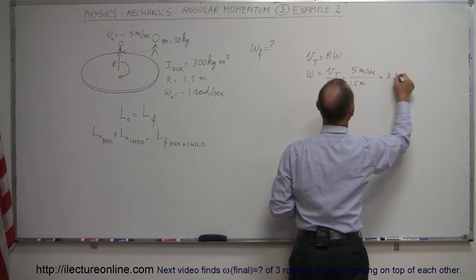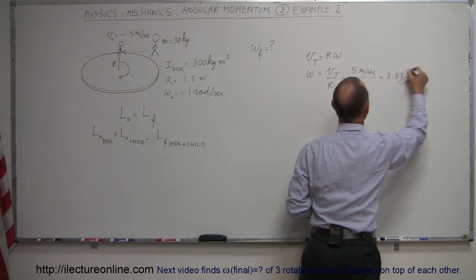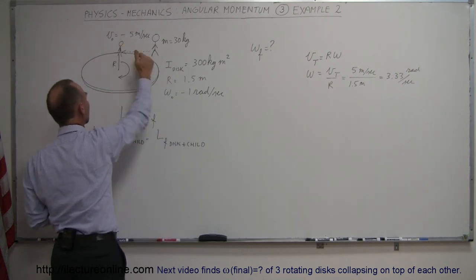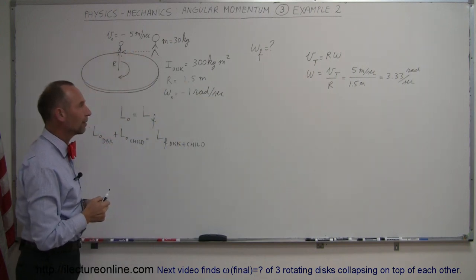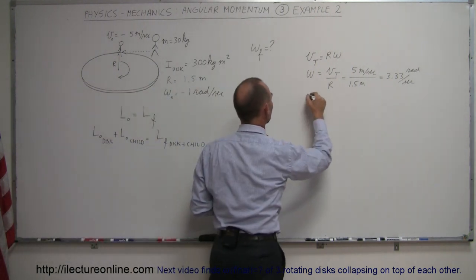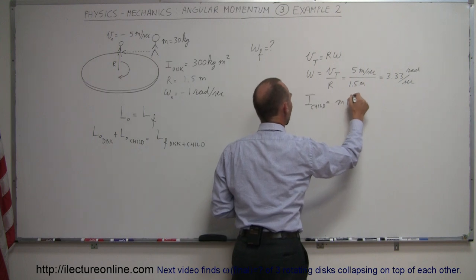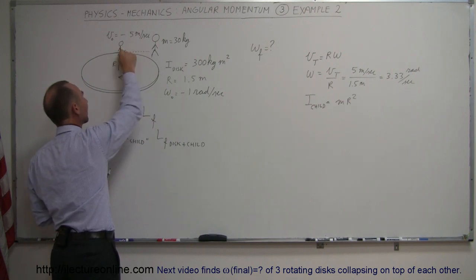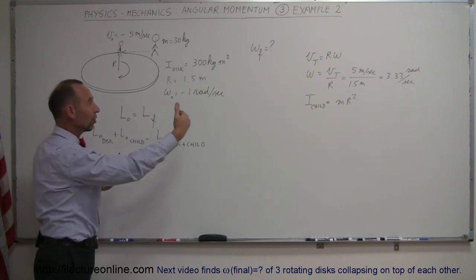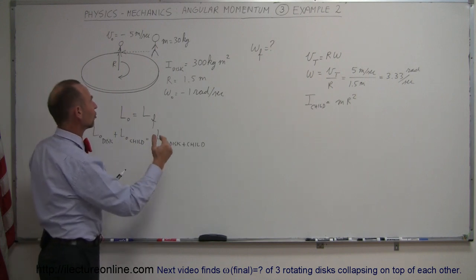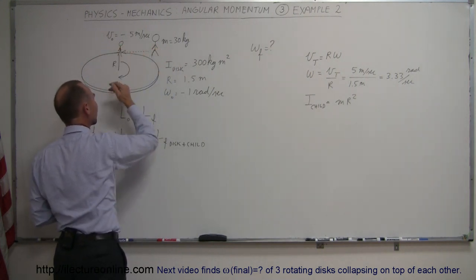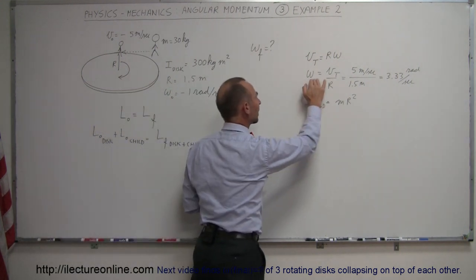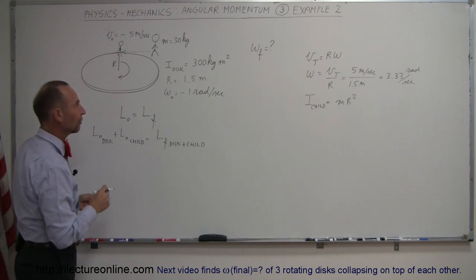...3.33 radians per second. So the child's equivalent angular velocity of its linear motion, once it hits the disc, is 3.33 radians per second. We can also find the equivalent moment of inertia of the child, which is mr squared, because once the child jumps on the disc it is at distance r from the center of rotation and all of the child's mass is at the edge. So even though the child runs in a straight line, the moment it jumps on the disc you can calculate the equivalent angular momentum using the moment of inertia and the equivalent angular velocity.